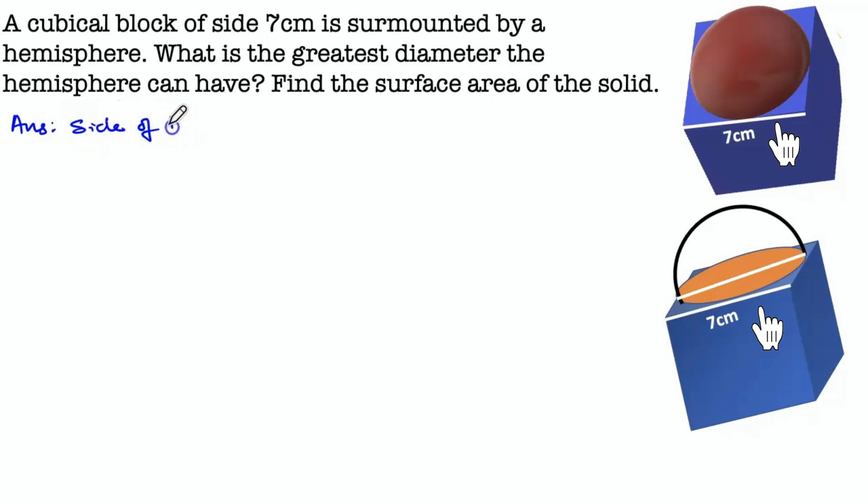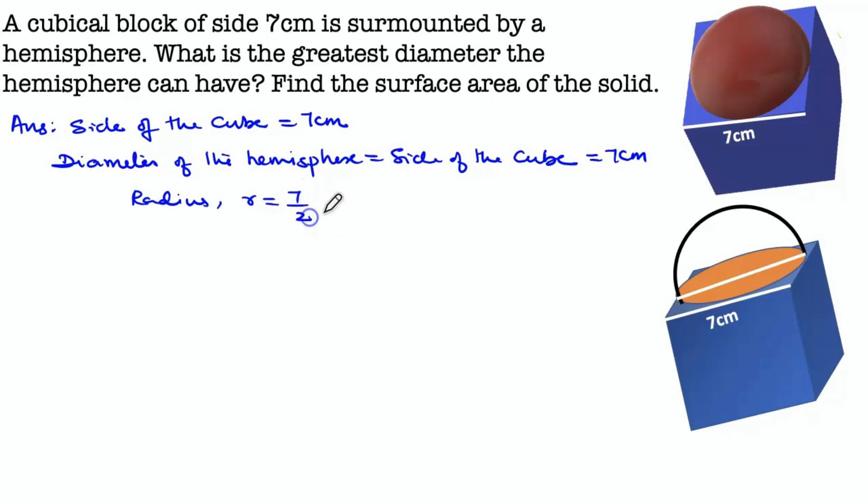Side of the cube equals 7 cm. Diameter of hemisphere and side of the cube is equal, so diameter equals 7 cm. Radius equals diameter divided by 2, radius equals 7 divided by 2.